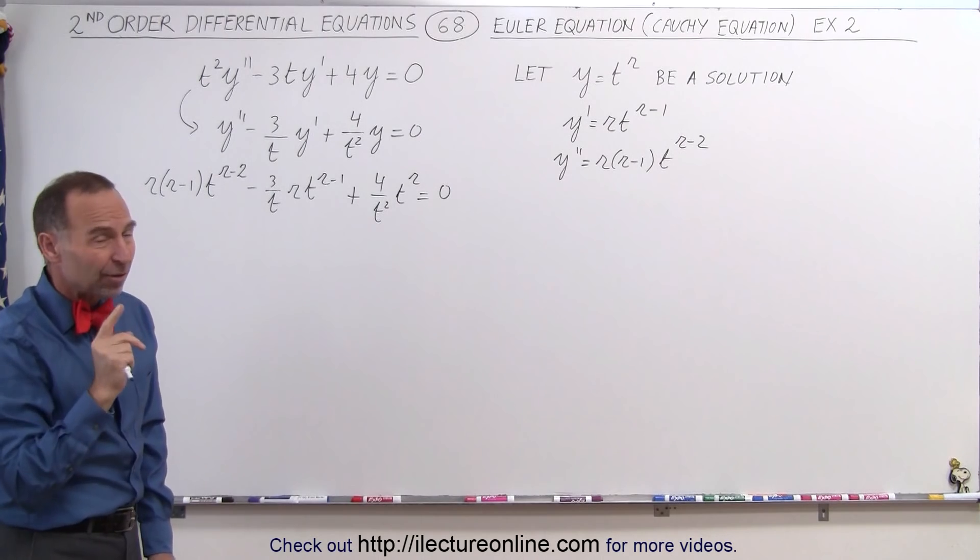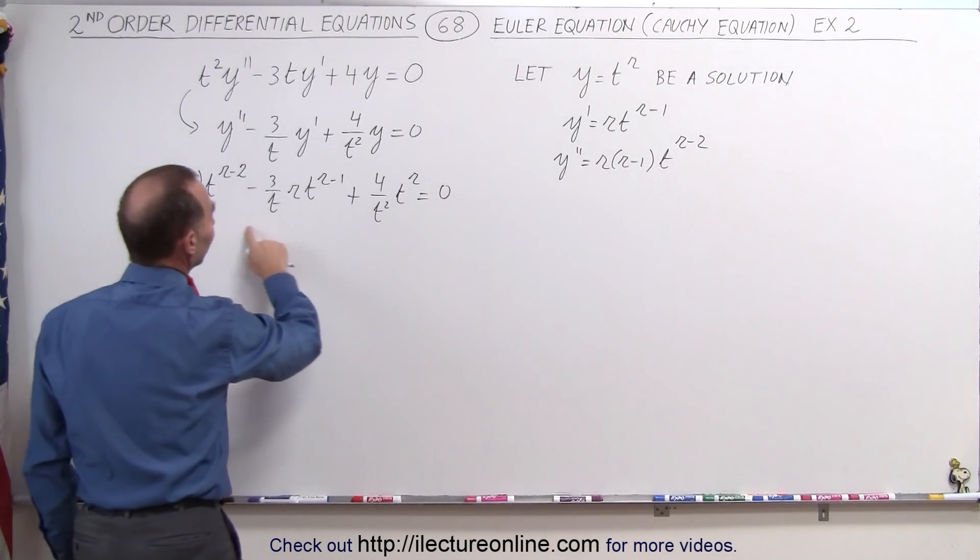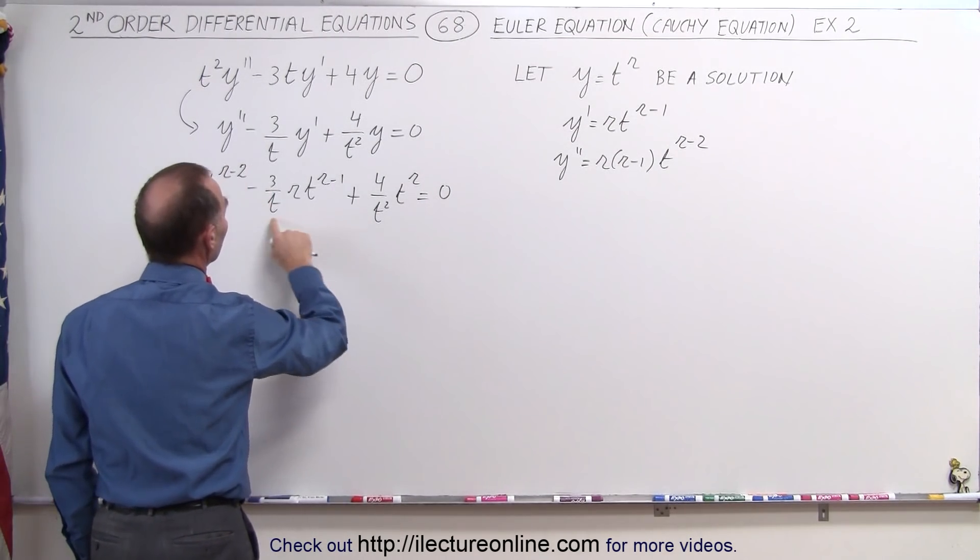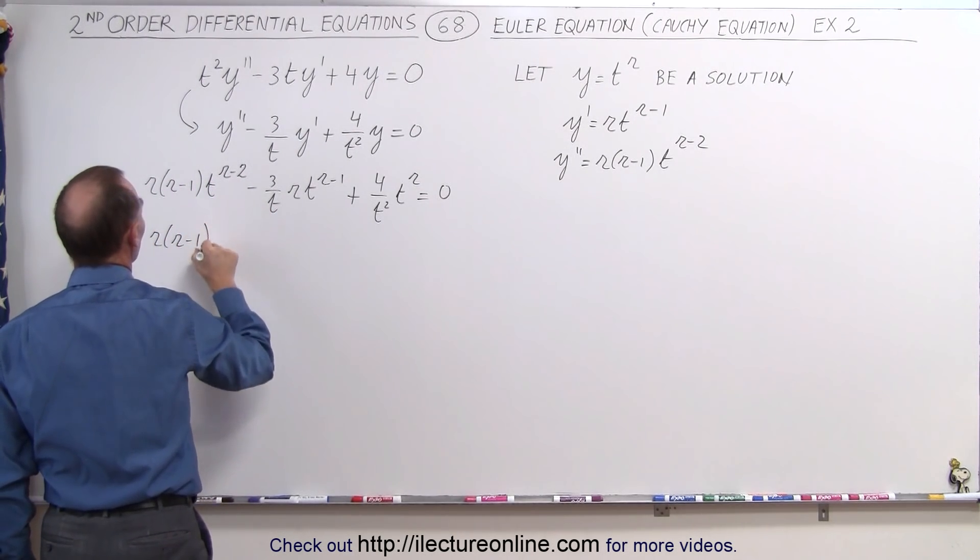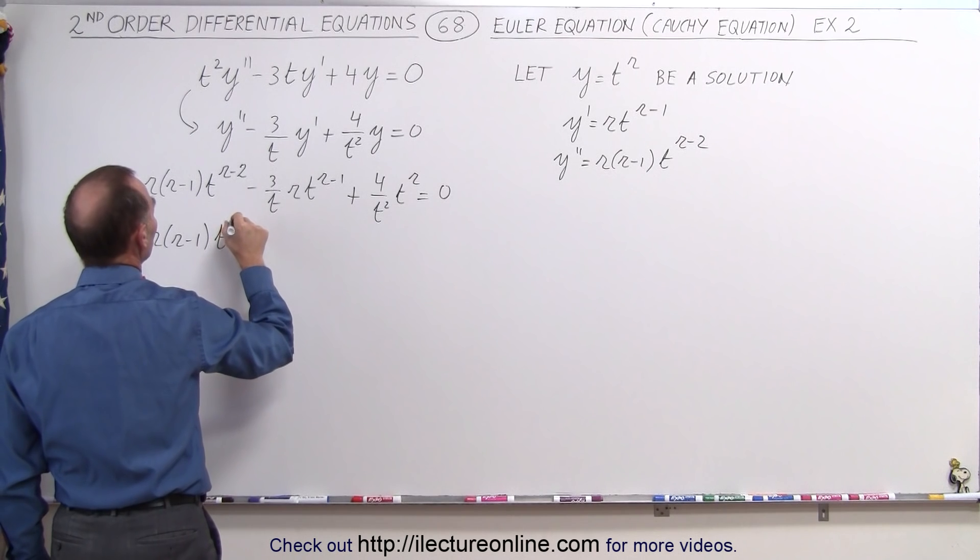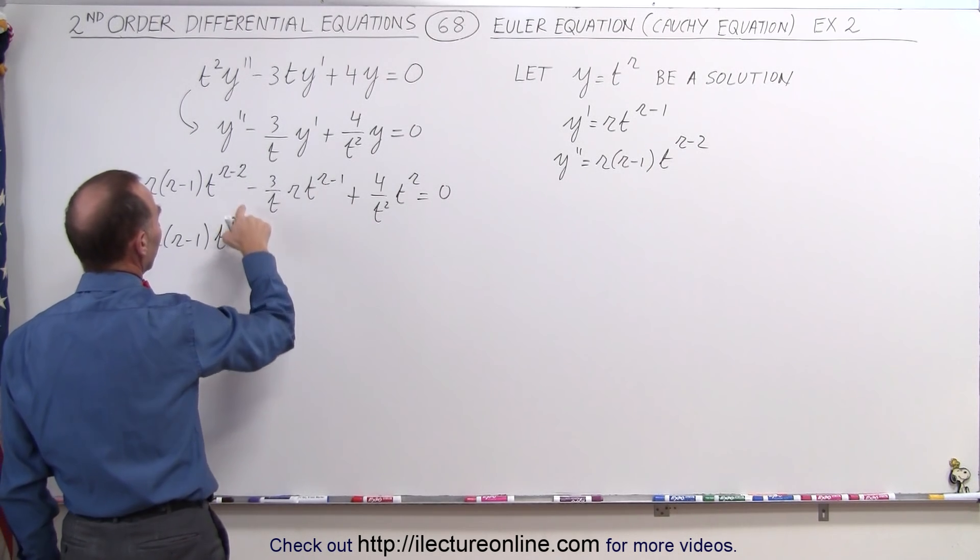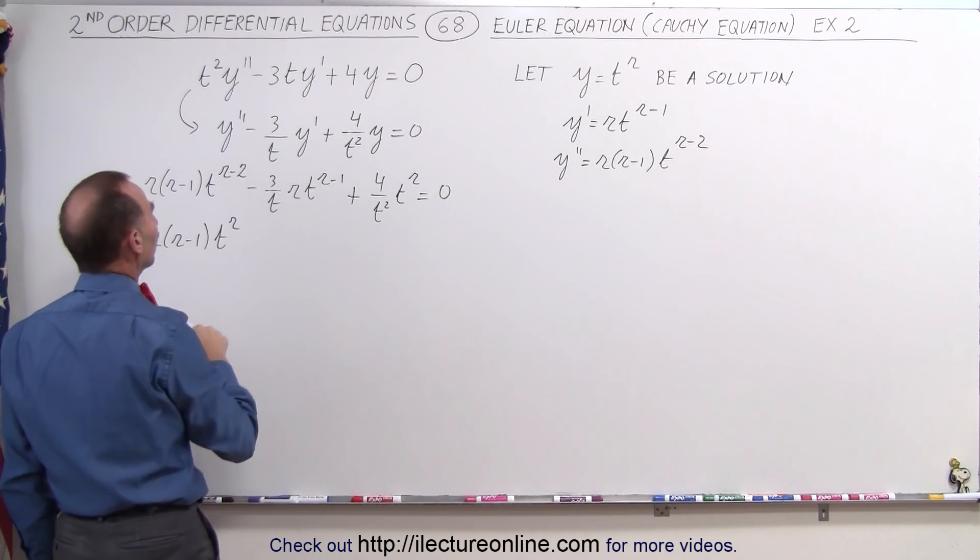To simplify things, we multiply everything by t² to get rid of the denominators. When we do that, we get r(r-1)t^r, because multiplying by t² makes the minus 2 exponent disappear.